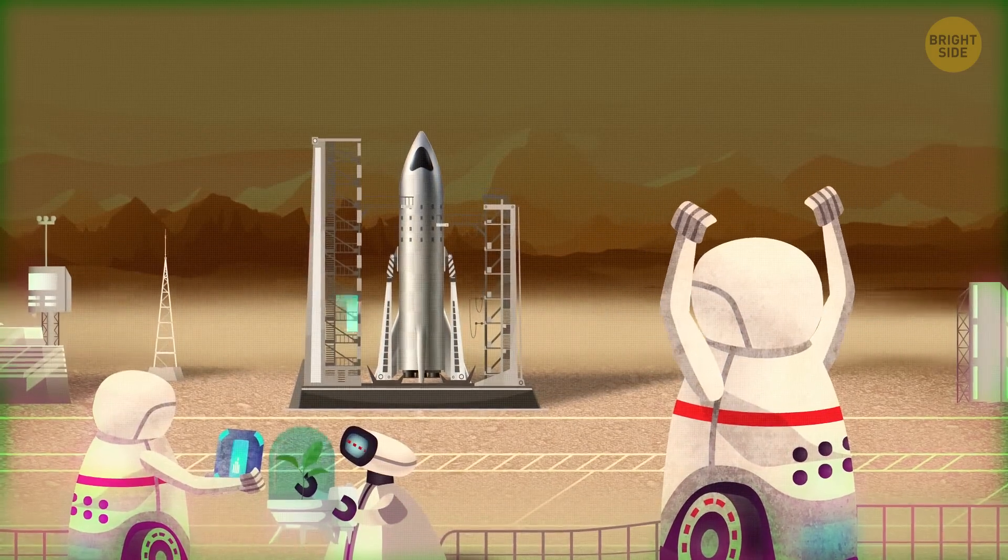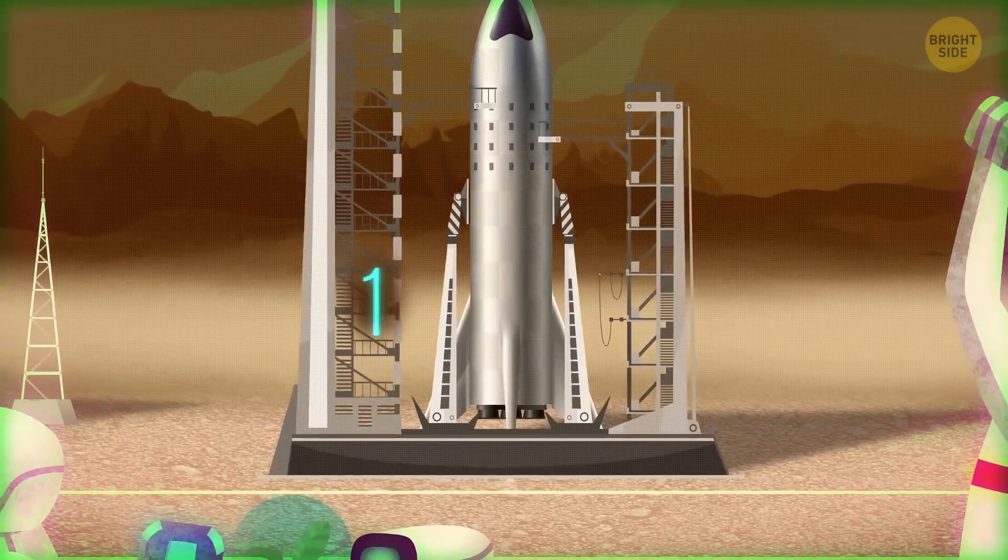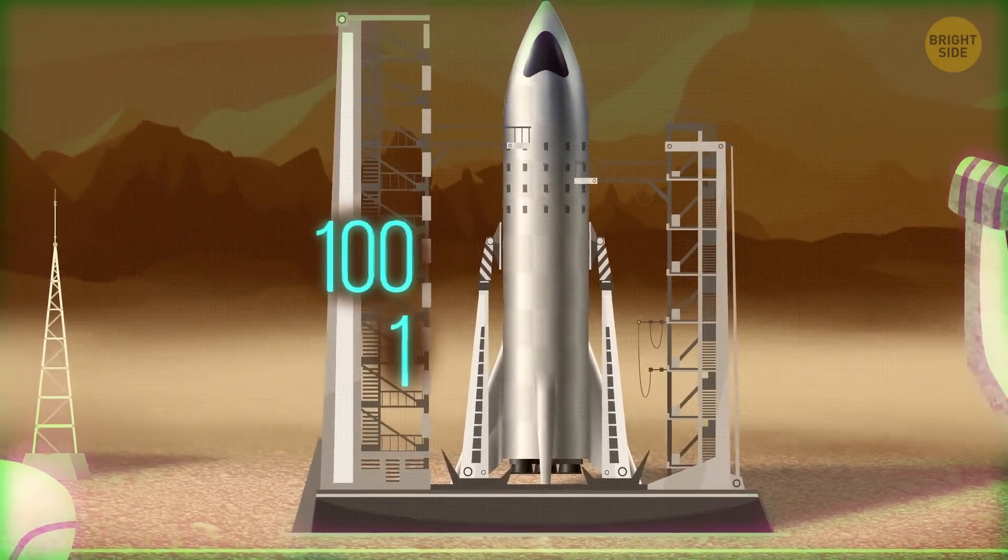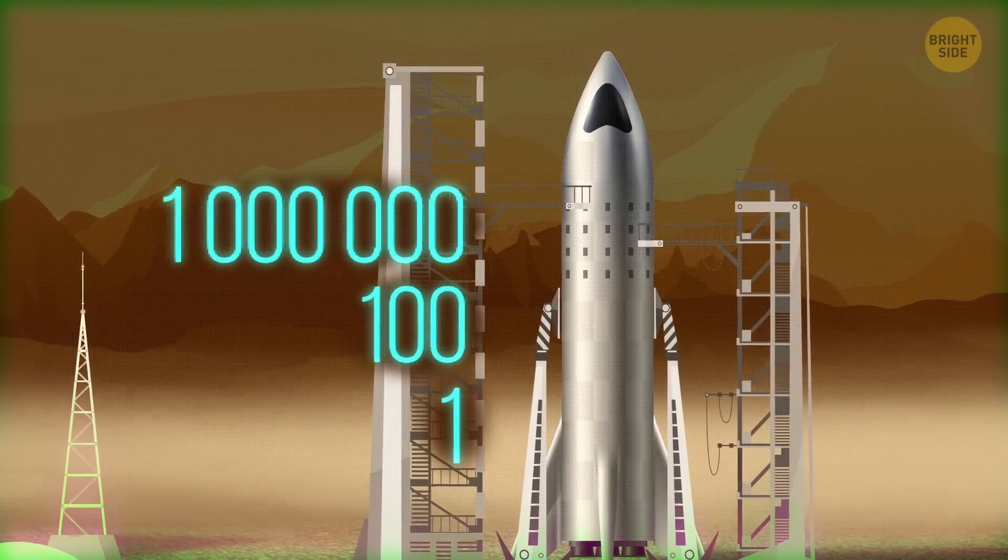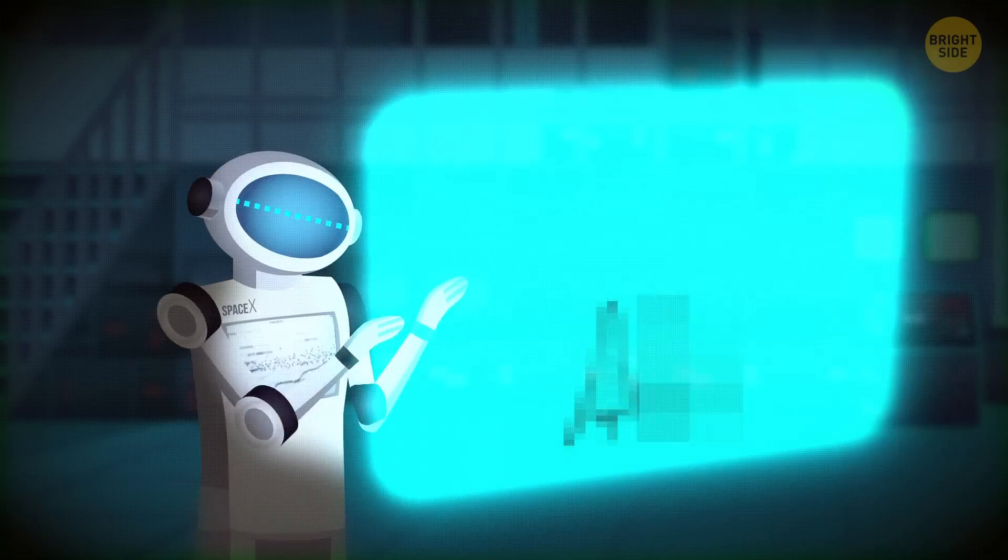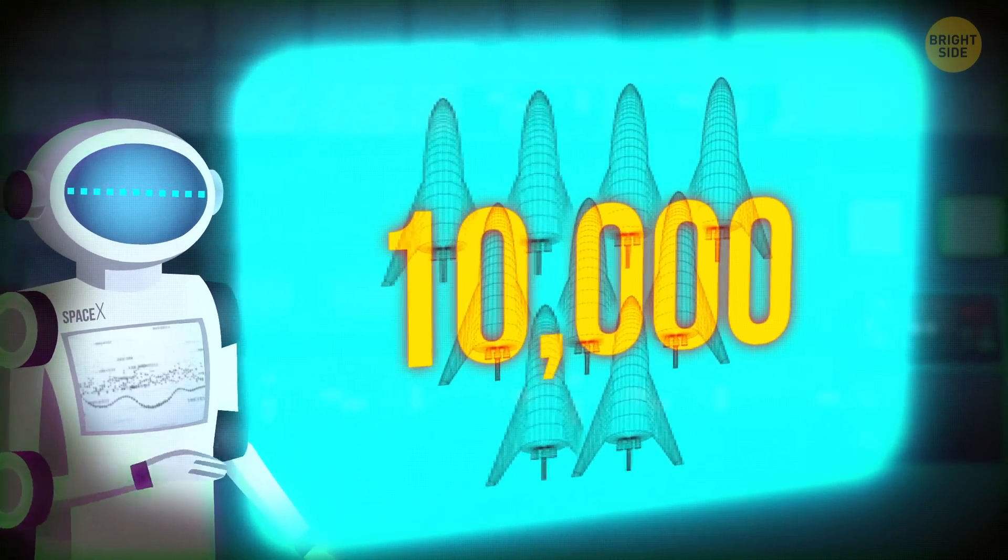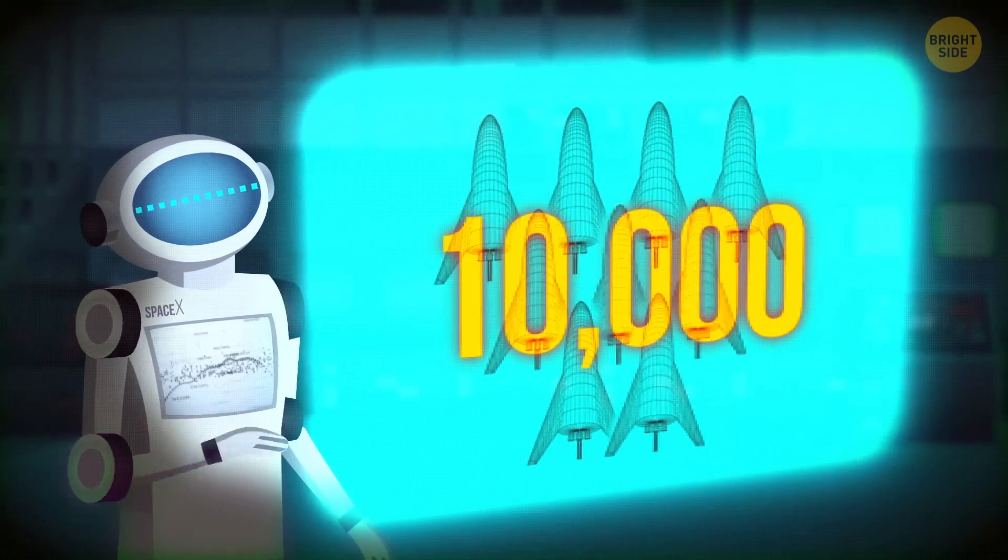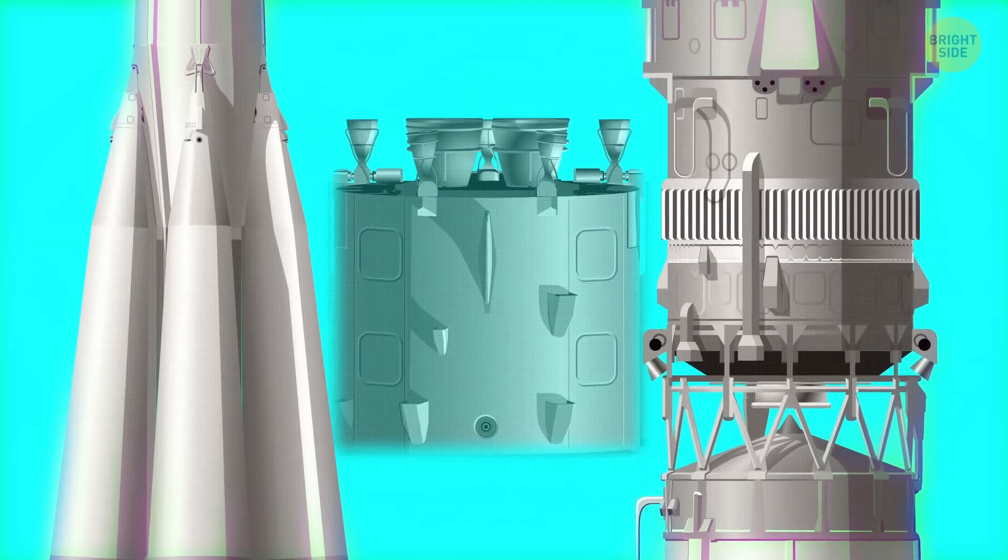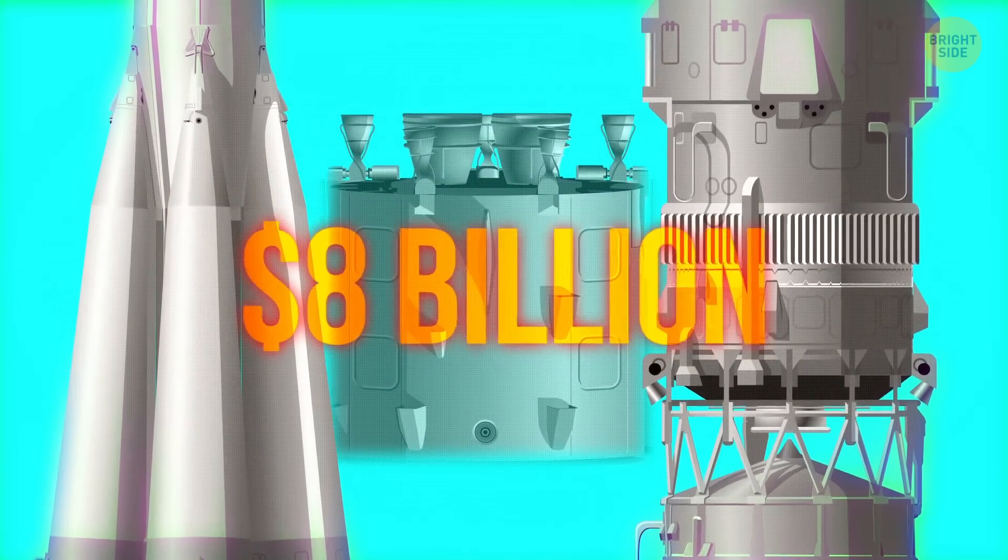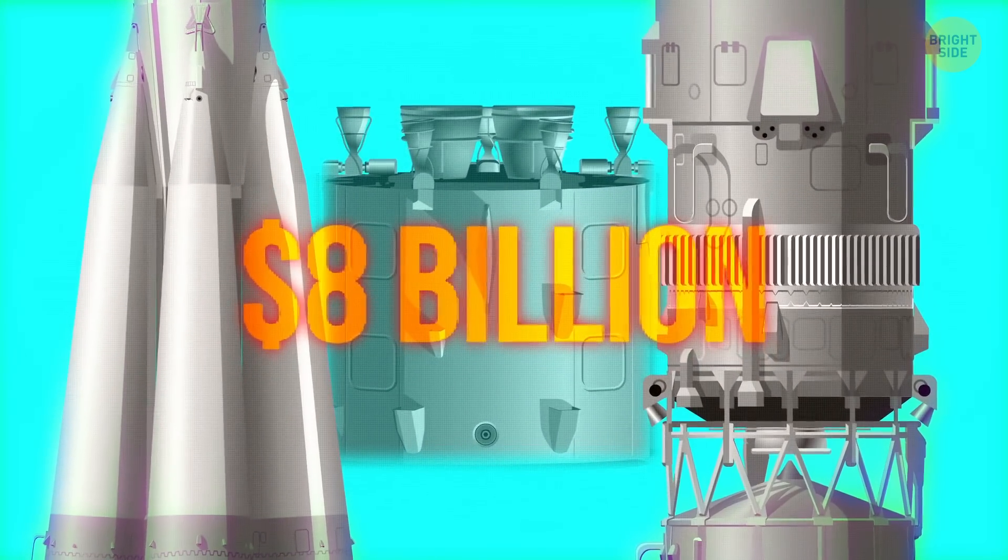This is how just one ship is planned to be launched. But it can only hold 100 people, while we're planning to send a million there. That's almost half the population of Brooklyn. That means we'll need at least 10,000 ships for the whole mission, and even more booster rockets to refuel and send cargo into orbit. Considering that one Starship costs about $8 billion, this mission would cost a pretty penny.